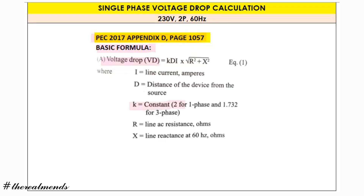The basic formula is: VD = K × D × I × √(R² + X²). Where K is a constant — 2 for single-phase, 1.732 for three-phase. D is the distance expressed in meters. I is the line current in amperes. R is the resistance and X is the reactance, both expressed in ohms per 305 meters.